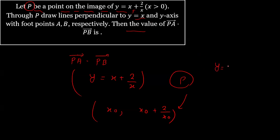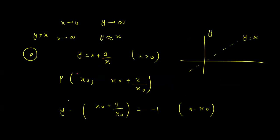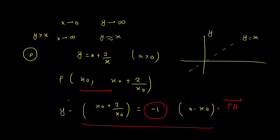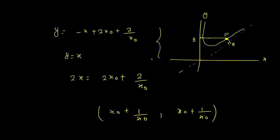The line y = x has slope m = 1, so the perpendicular line will have slope −1. We can find the equation of line PA using point P and slope −1. In the graph we can also see: the perpendicular line through P to y = x has slope −1.